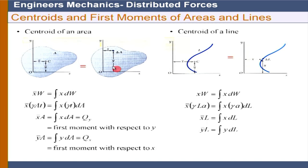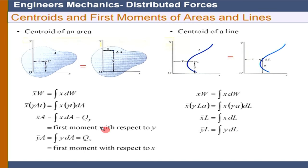We can find the position of the centroid from our predefined x and y axes. What this means is that if we locate the centroid and have the centroidal axis, the first moment about the centroidal axis must equal zero. With respect to the centroidal axis, the first moment must be zero.